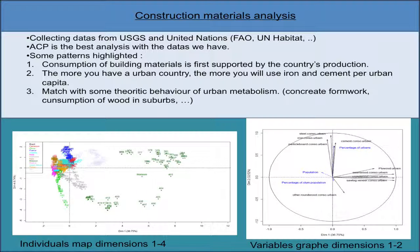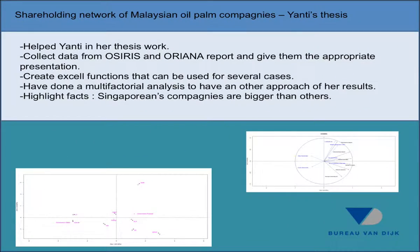Countries with recent construction trends in central business districts clearly consume high quantities of iron, steel, and cement. Interesting patterns also appear in developing countries; these patterns may come from wood consumption by slums. In all cases, iron, steel, and plywood consumption seem determined by practices and national habits. The typical way concrete formwork is made with iron or wood plays a major role.